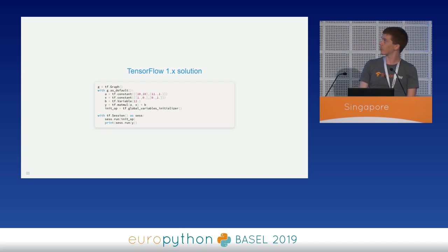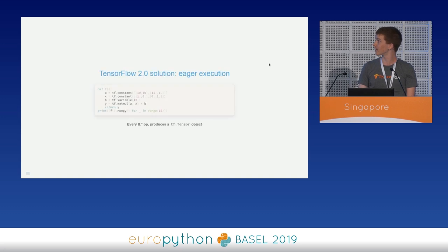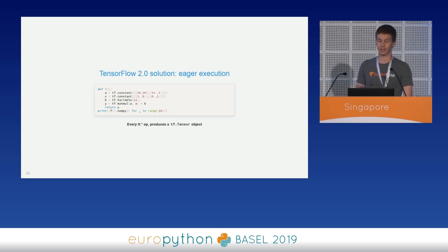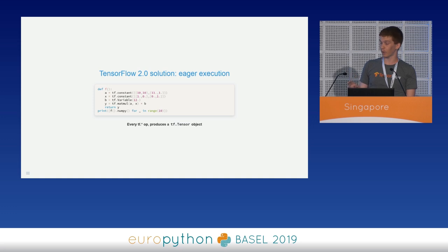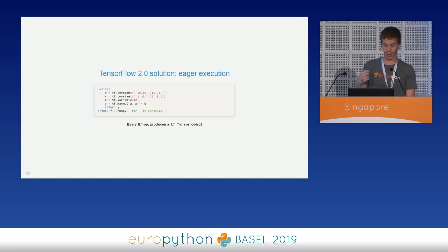This is the standard TensorFlow 1 implementation. In TensorFlow 2, thanks to eager execution, the solution becomes really, really easier. We just declare the constants and variables, and the computation is executed directly without the need to create a session. We write the code inside a function, and executing the function has the same behavior as the previous session.run on the output node. The only peculiarity is that every tf operation like tf.constant, tf.matmul, and so on, produces a TF tensor object — not a Python native type or a NumPy array. Therefore, we have to extract the NumPy representation by calling the .numpy() method.